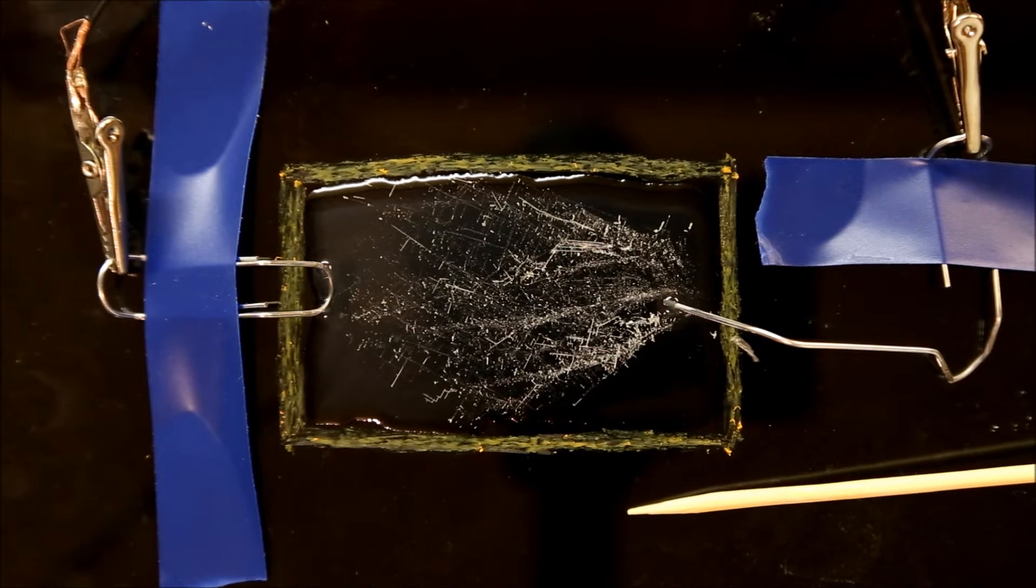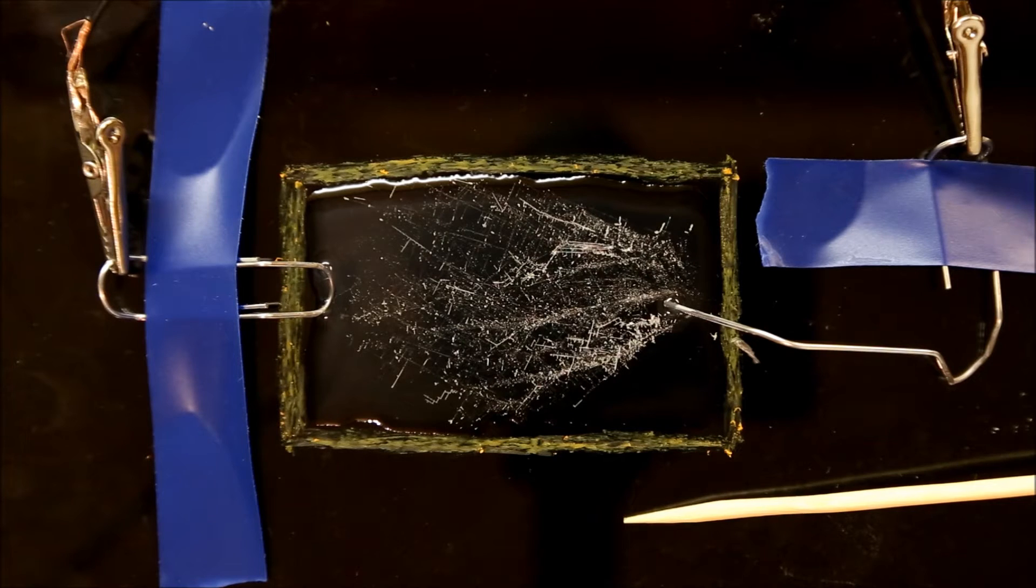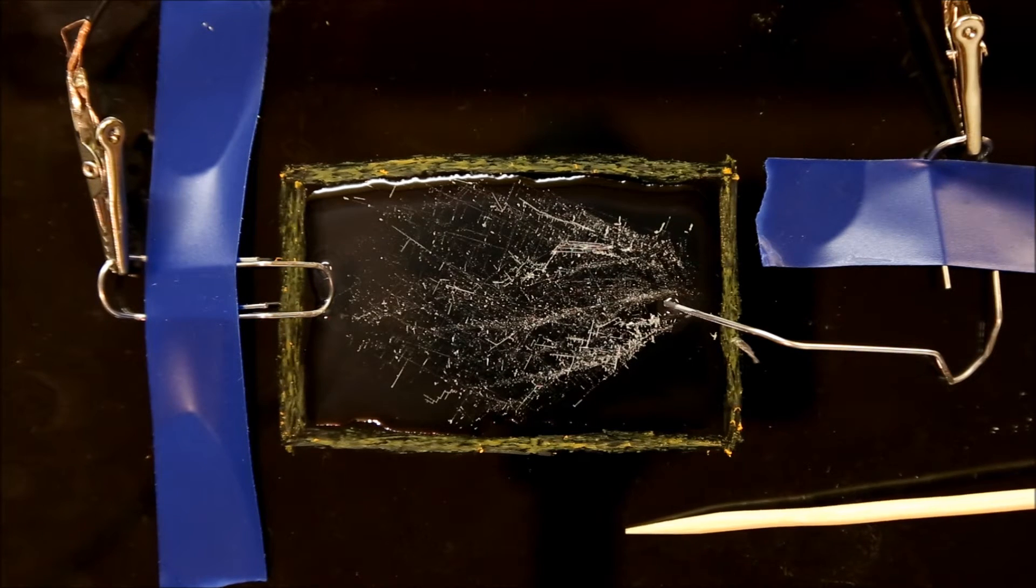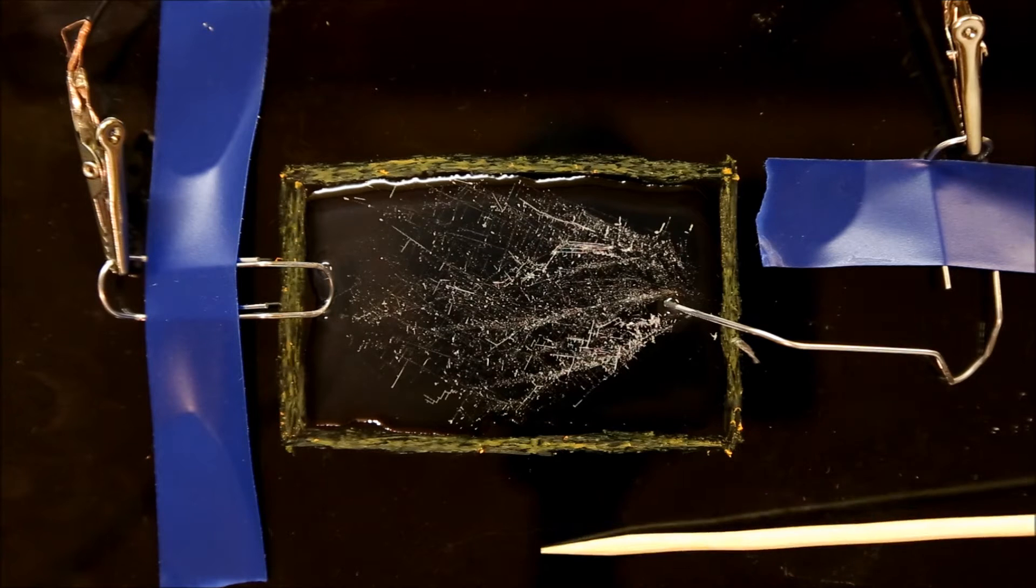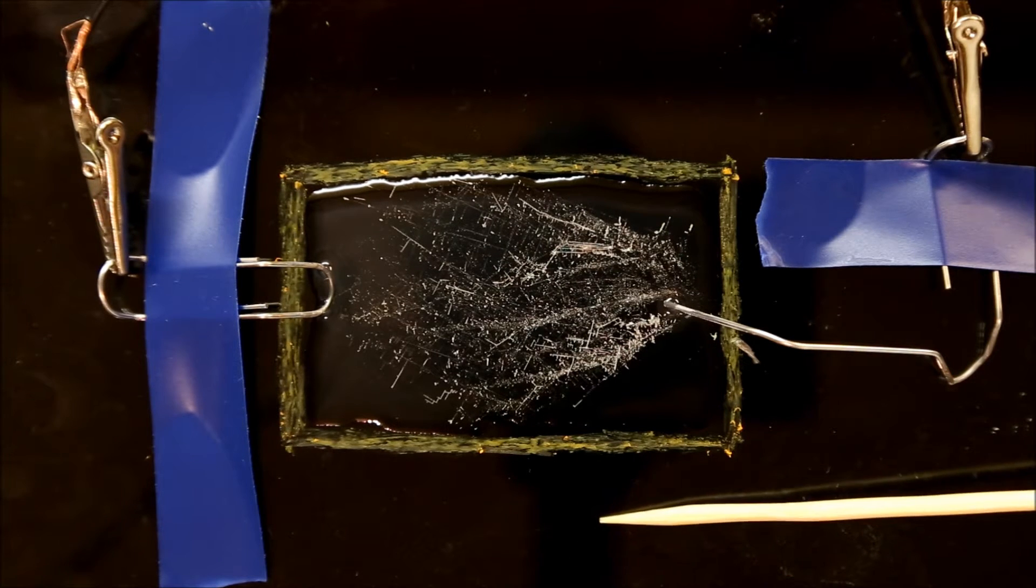I experimented with many different setups for growing tin crystals using electricity, and the one that worked best for me as far as producing the cleanest videos was to start with a piece of black velvet as a background, and place a sheet of glass on top of that.